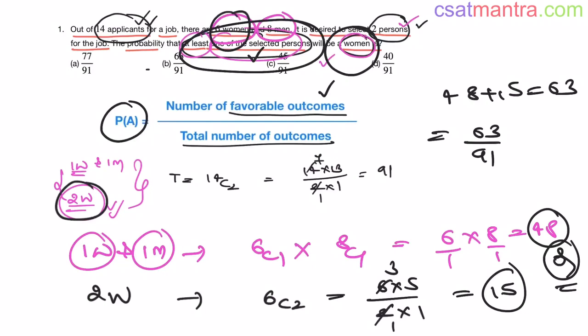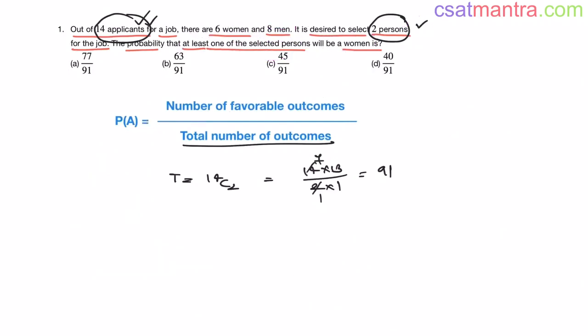So our answer is B. You can solve this problem another way also — this alternate method is very important to learn because in some problems you won't need to enumerate all cases like one woman, two women, three women.